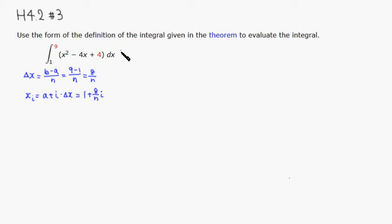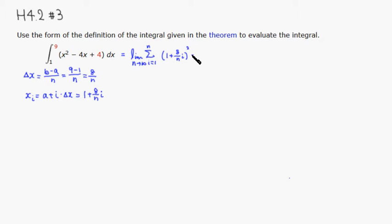Let's follow the definition. So we have the limit as n approaches infinity of the summation from i equals 1 to n of f(xᵢ). We replace x by xᵢ, so x² becomes (1 + 8i/n)², minus 4x becomes -4(1 + 8i/n), plus 4, and then delta x is 8/n.